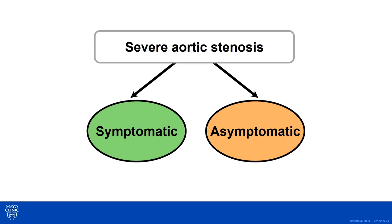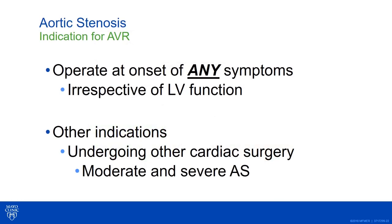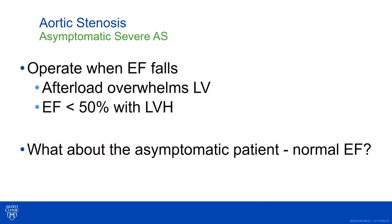Now that we've identified someone with severe aortic stenosis, we want to figure out how to manage patients with symptoms versus without symptoms. When symptoms start, the natural history really turns bad — that is the first indication for operation in AS. If a patient has symptoms attributable to aortic stenosis, aortic valve intervention is indicated. Also, if they need other cardiac intervention and have at least moderate AS — bypass grafting or mitral valve operation — replacing the aortic valve is also reasonable. And if the ejection fraction has fallen, indicating LV decompensation, that's another indication for aortic valve intervention.